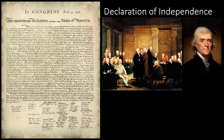In mid-June 1776, a five-man committee including Thomas Jefferson, John Adams, and Benjamin Franklin were tasked with drafting a formal statement of the colonies' intentions. The Congress formally adopted the Declaration of Independence, written largely by Jefferson, in Philadelphia on July 4th, a date now celebrated as the birth of American independence.